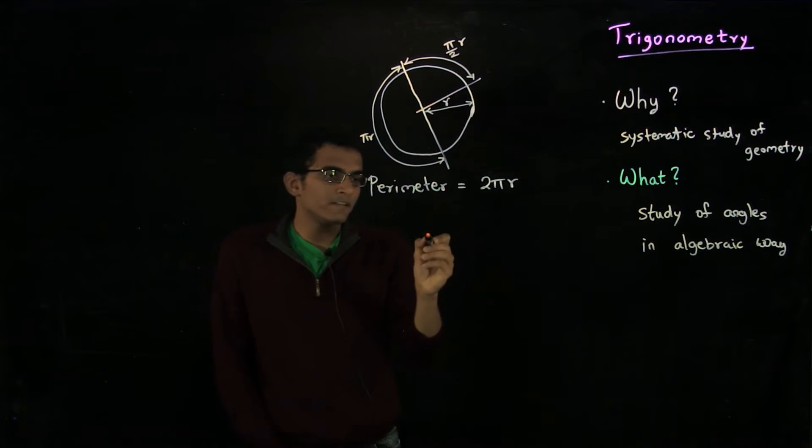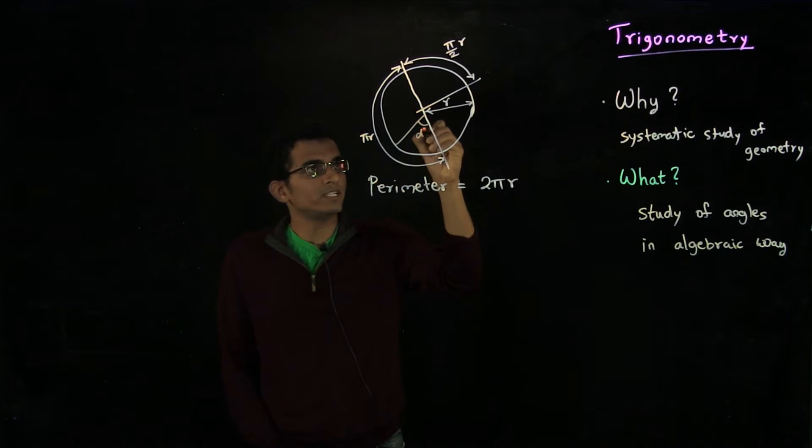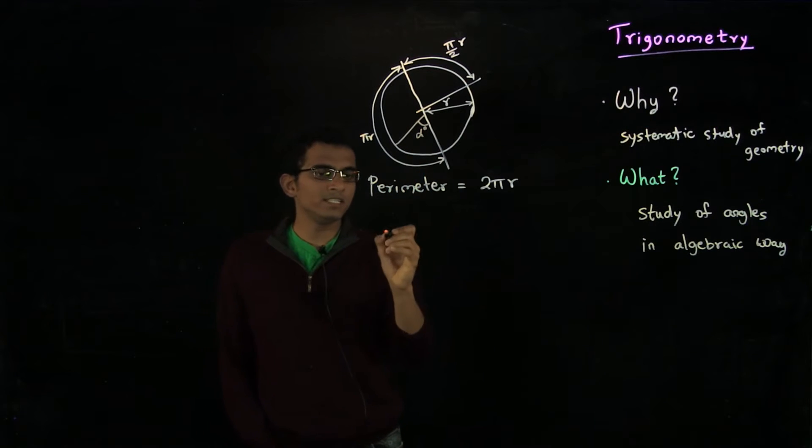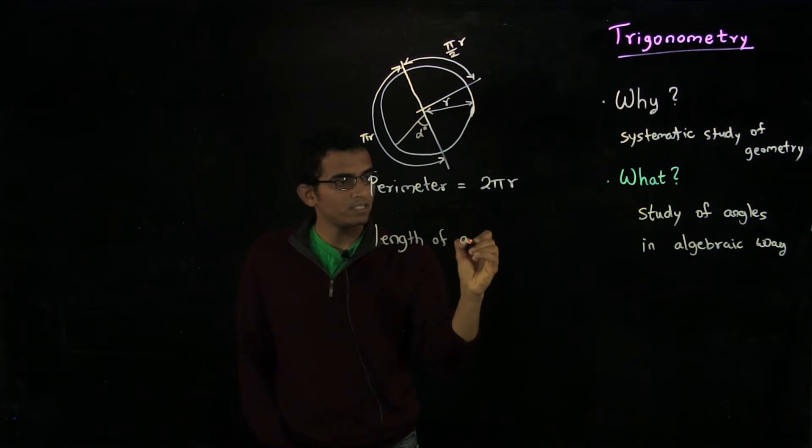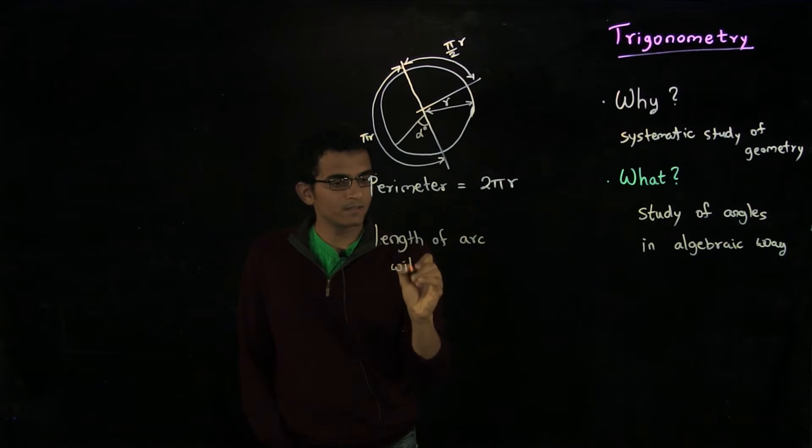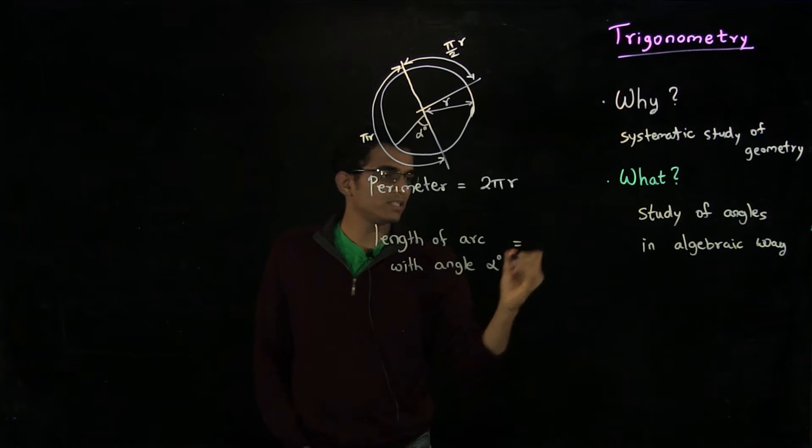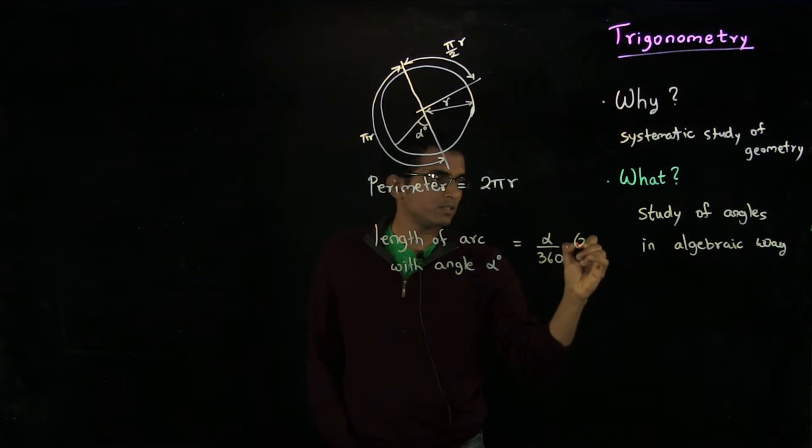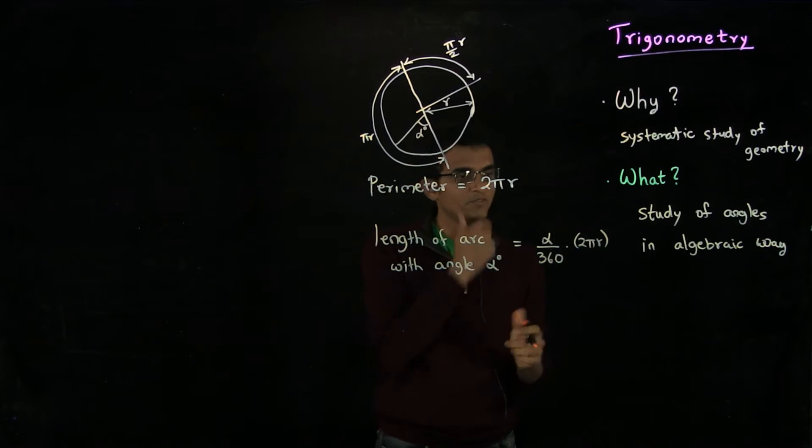In general, if I pick out an angle of, let's say, alpha degrees, like 60 degrees, then you can easily reason that the length of an arc with angle alpha degrees is (alpha/360) times 2πr. This is just basic ratio and proportion type of argument.